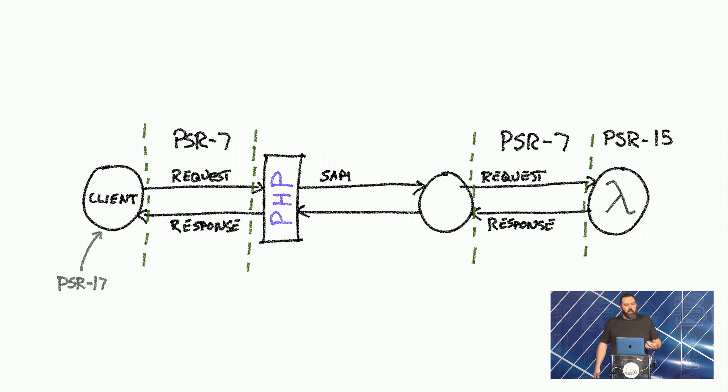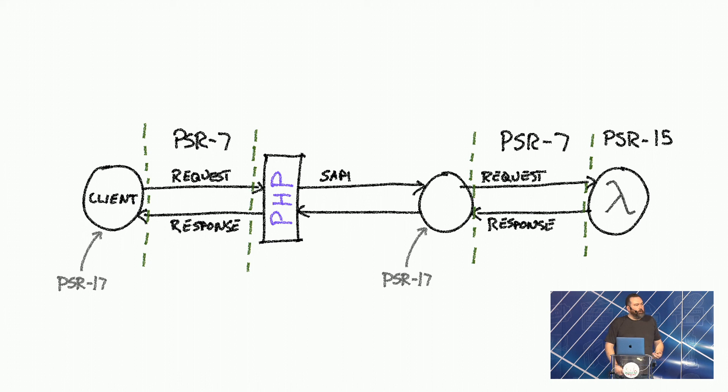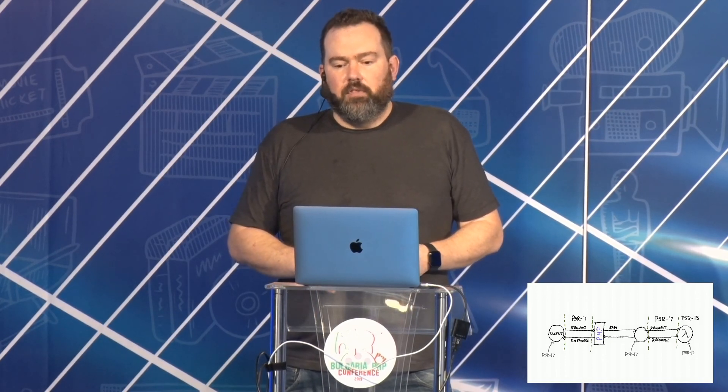So if we look at our grand picture: the client can use PSR-17 to generate URLs and requests. The actual front controller can use PSR-17 to generate the server request object from the superglobals that come from PHP. And on the server side, we can use PSR-17 to generate new responses, generate URLs if we need to, and generate streams and so forth.